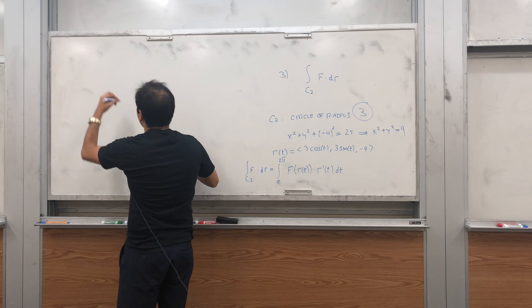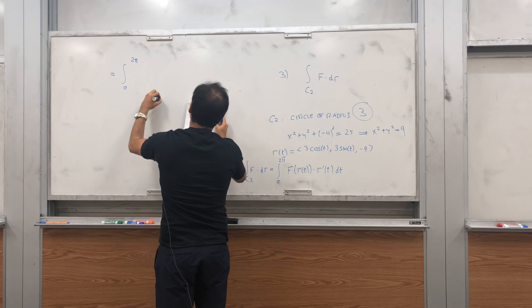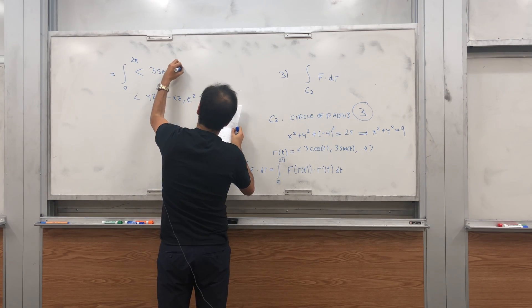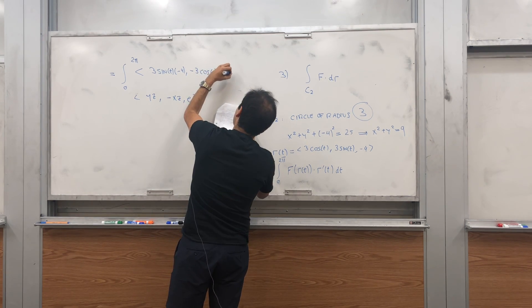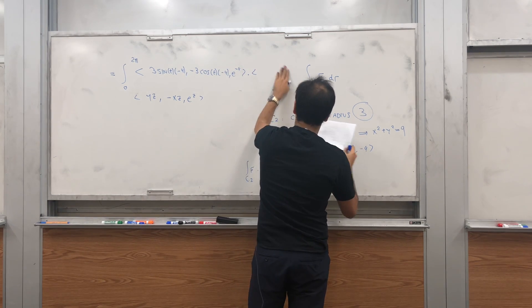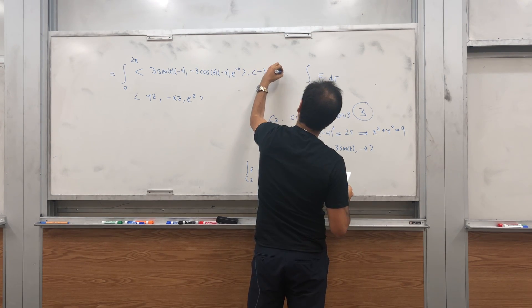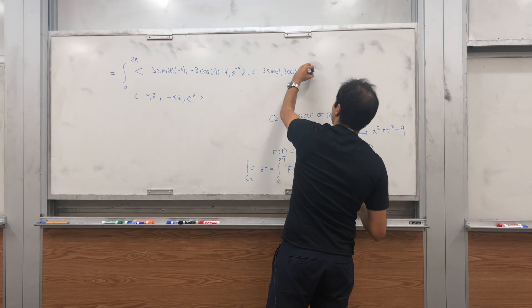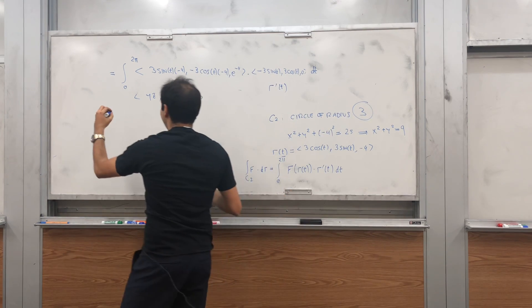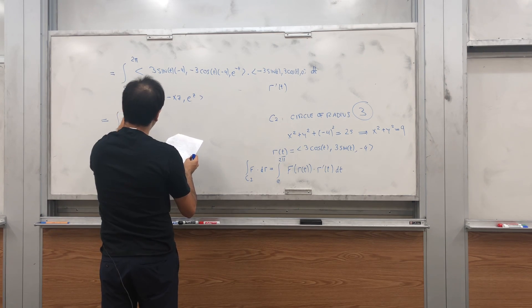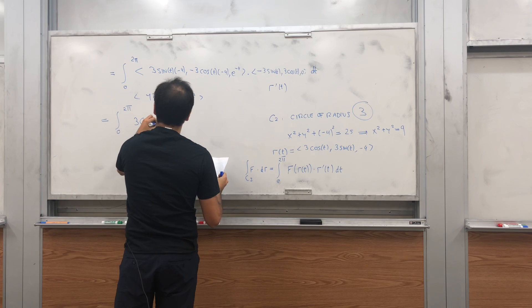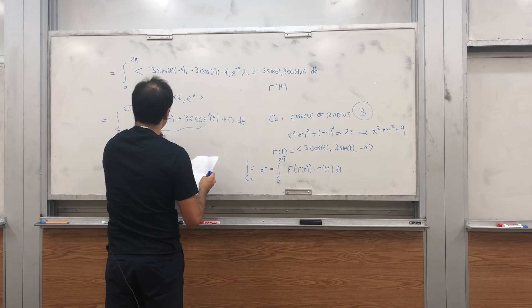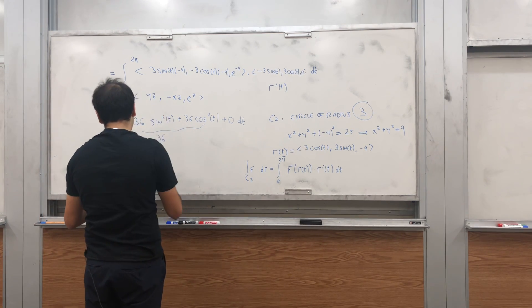Plugging in — f is (yz, -xz, e^z) — so f(r(t)) = (3sin(t)·(-4), -3cos(t)·(-4), e^(-4)), and r′(t) = (-3sin t, 3cos t, 0). Dotting these: 3·(-4)·(-3)sin²t + 3·4·3·(-1)·... simplifies to 36sin²t + 36cos²t + 0 = 36. Integrating 36 from 0 to 2π gives 72π.